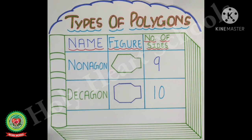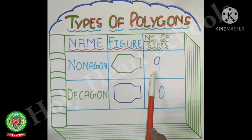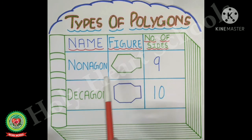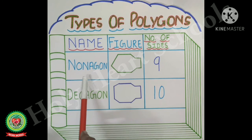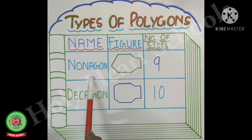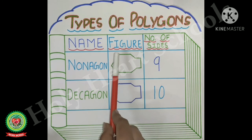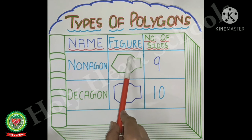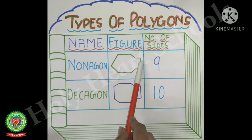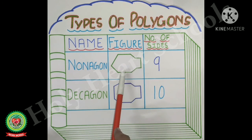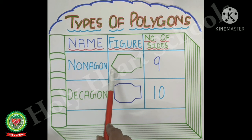The next type of polygon is the polygon which has nine sides. That polygon is called a nonagon. This figure has one, two, three, four, five, six, seven, eight and nine sides. So it is an example of a nonagon.